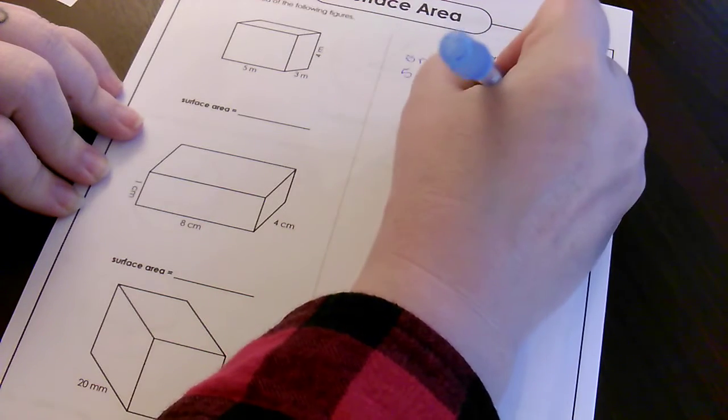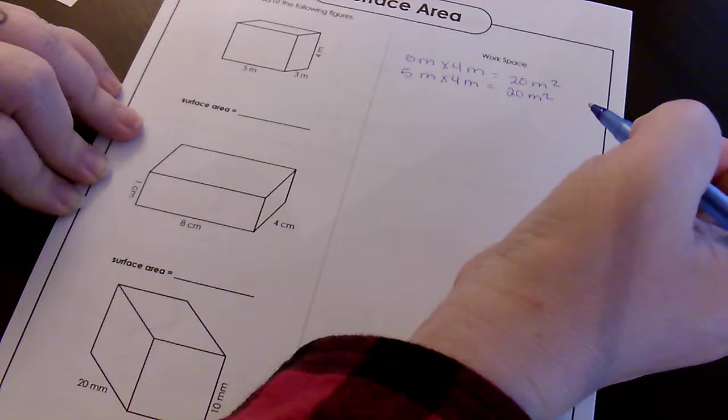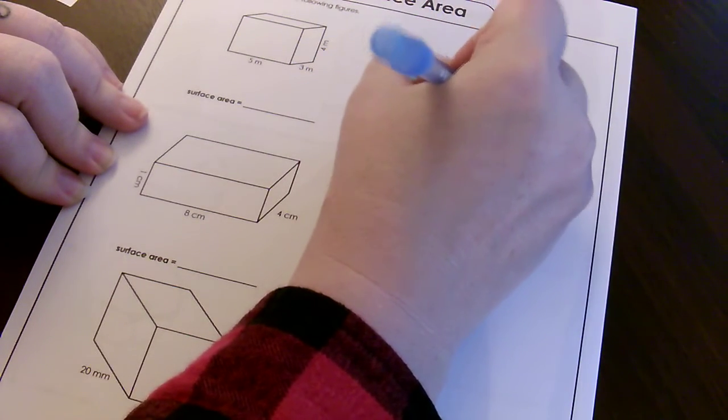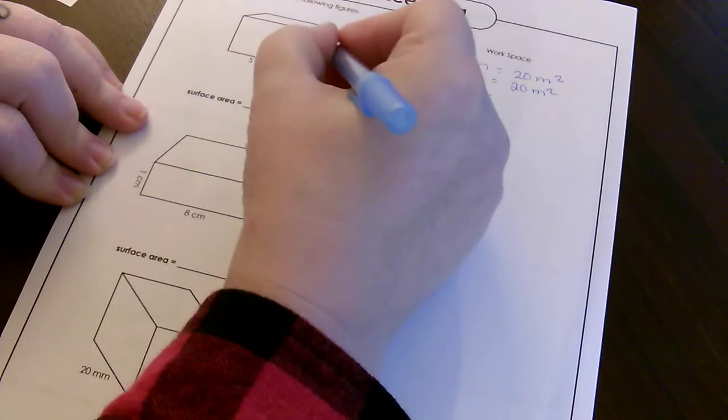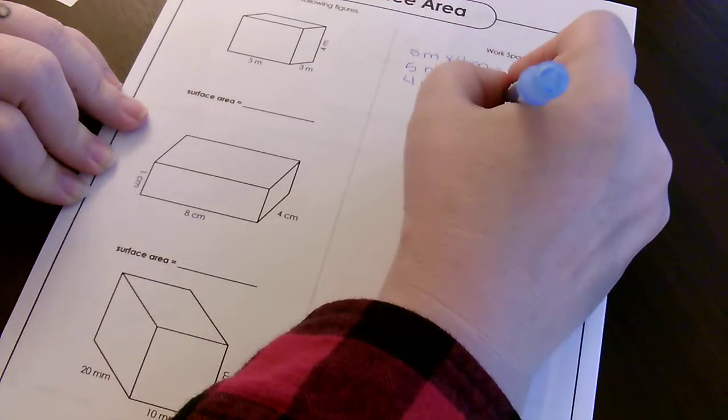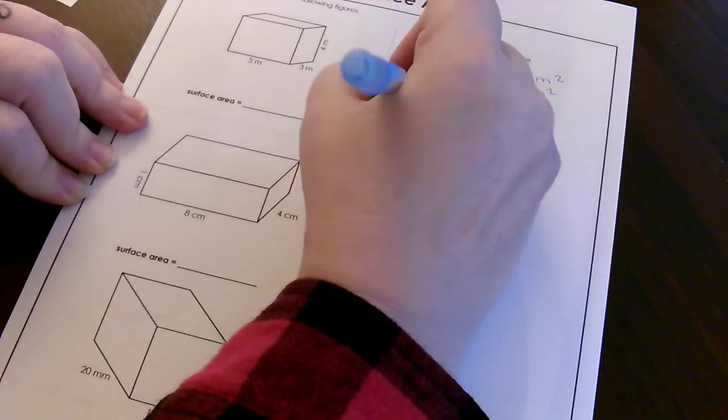Next one is 4 meters times 3 meters, 4 times 3, and that's going to give me 12 meters squared. I'm going to do that again because that's also mirrored.